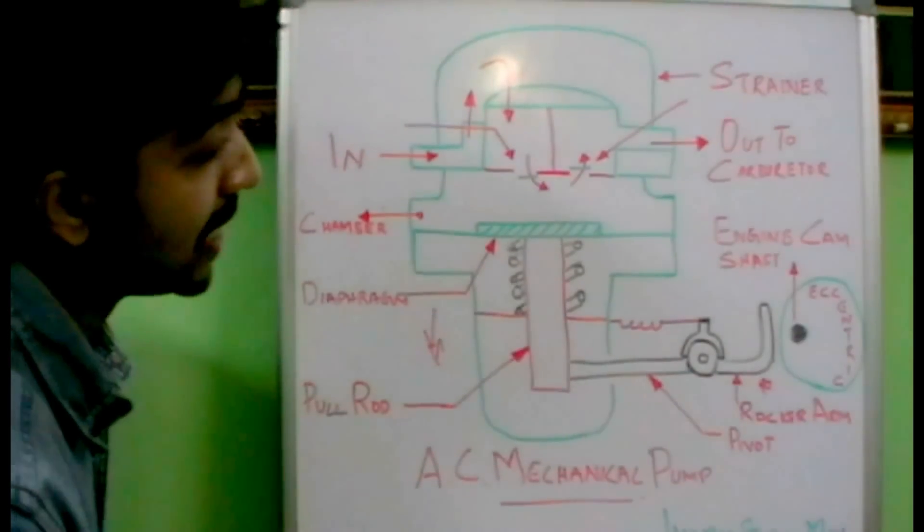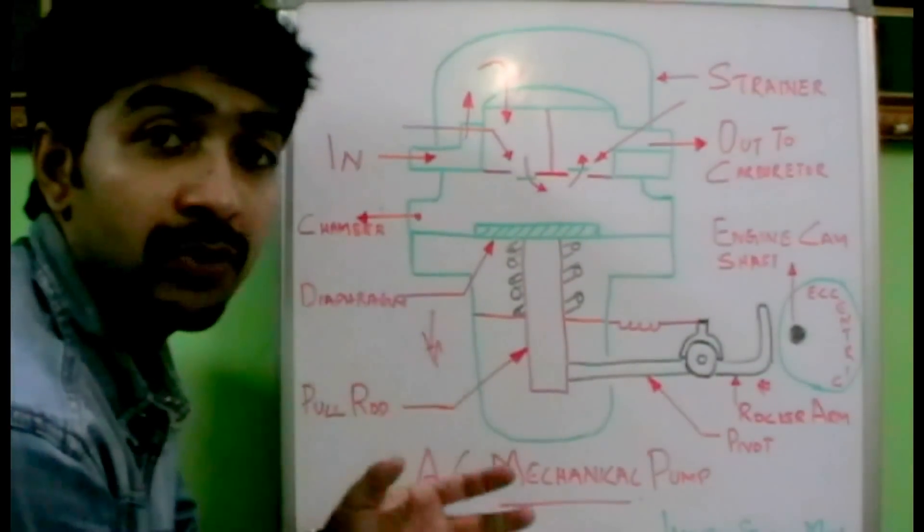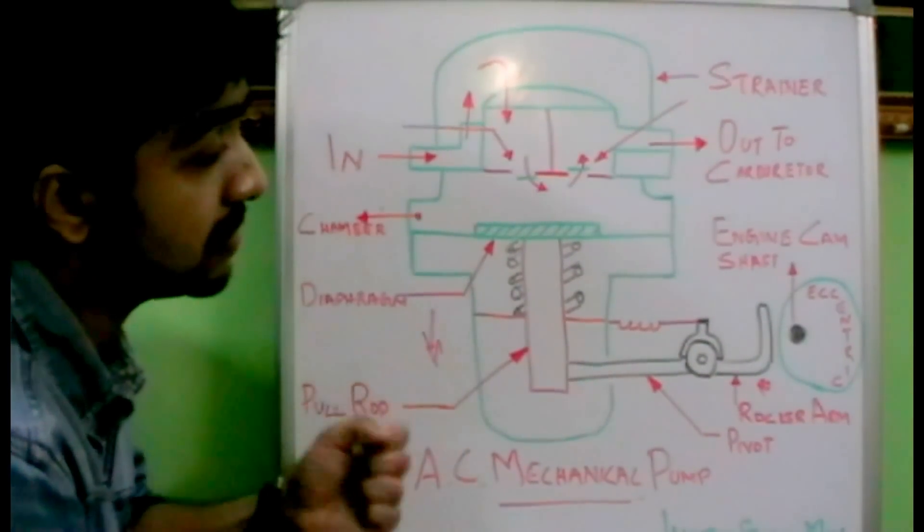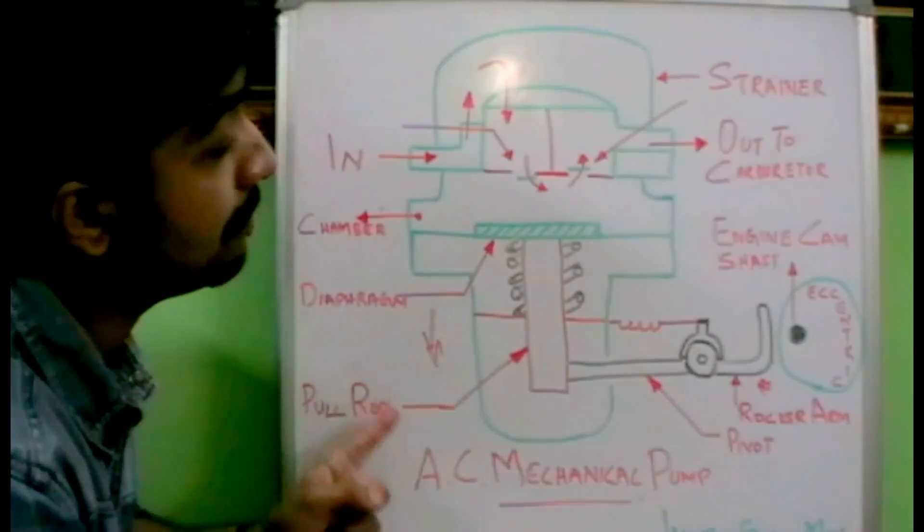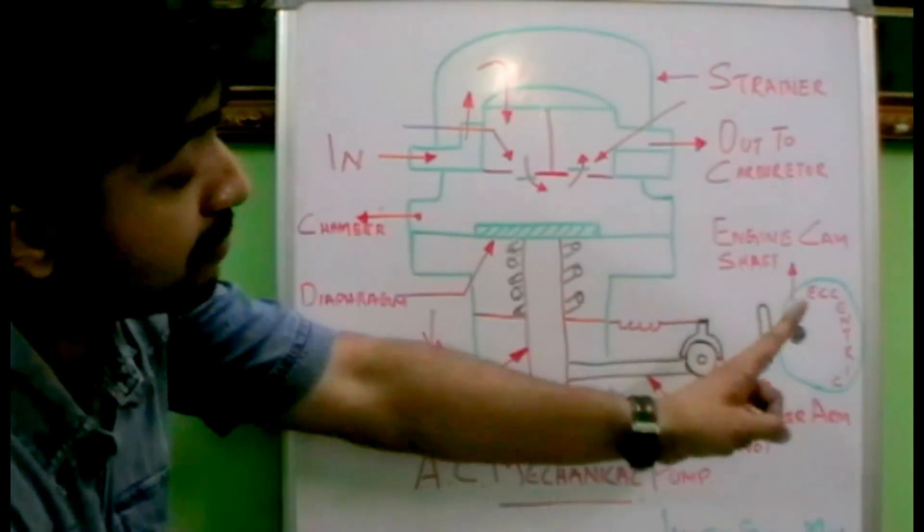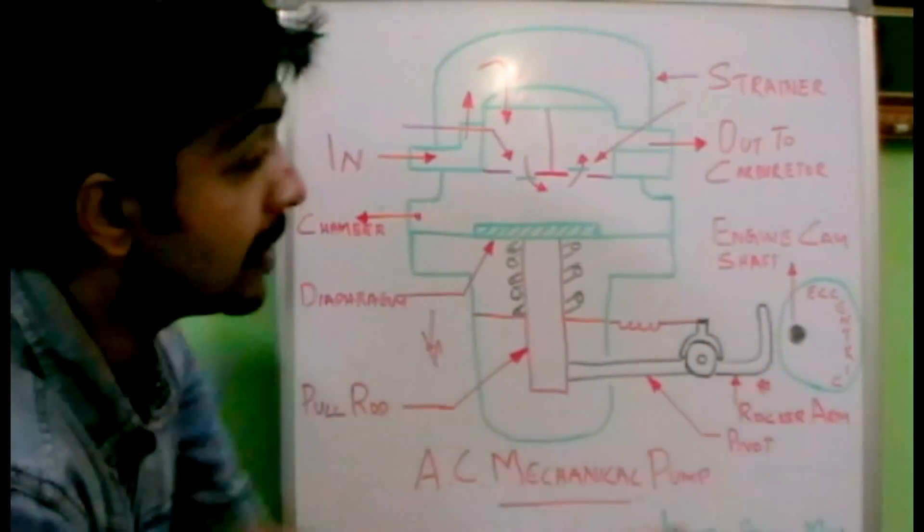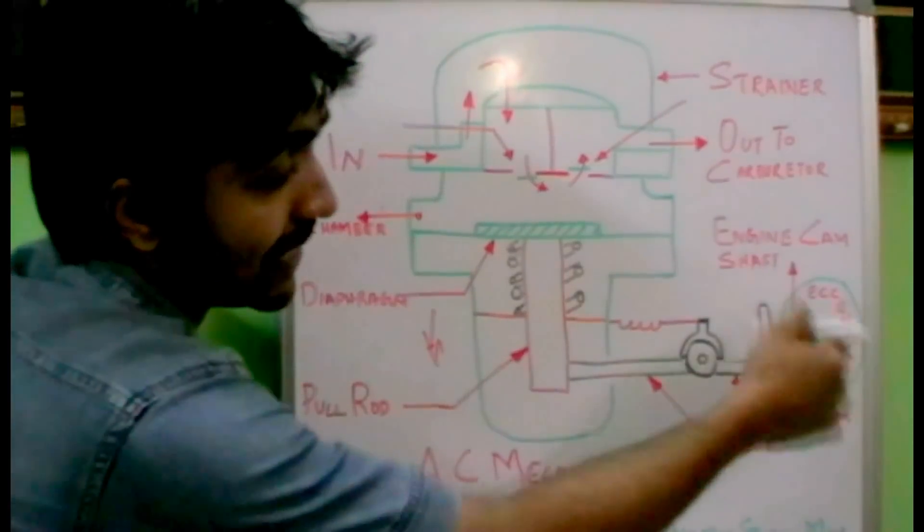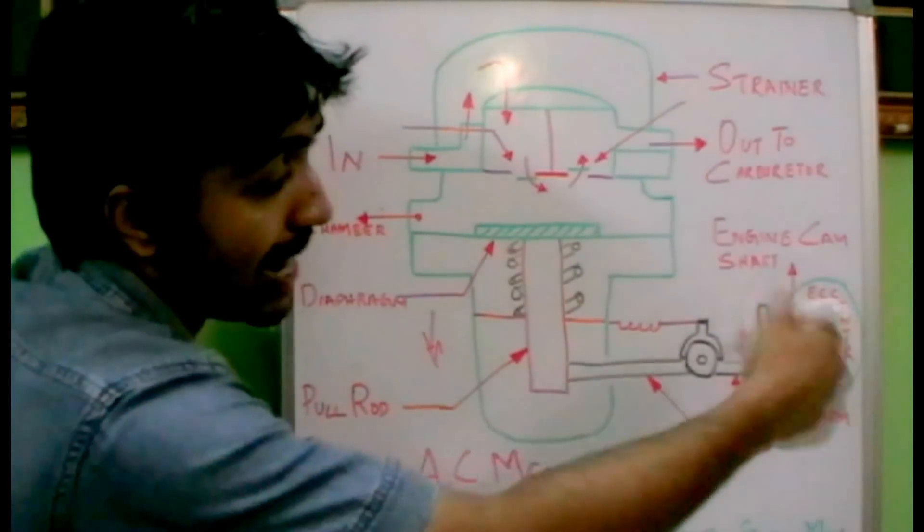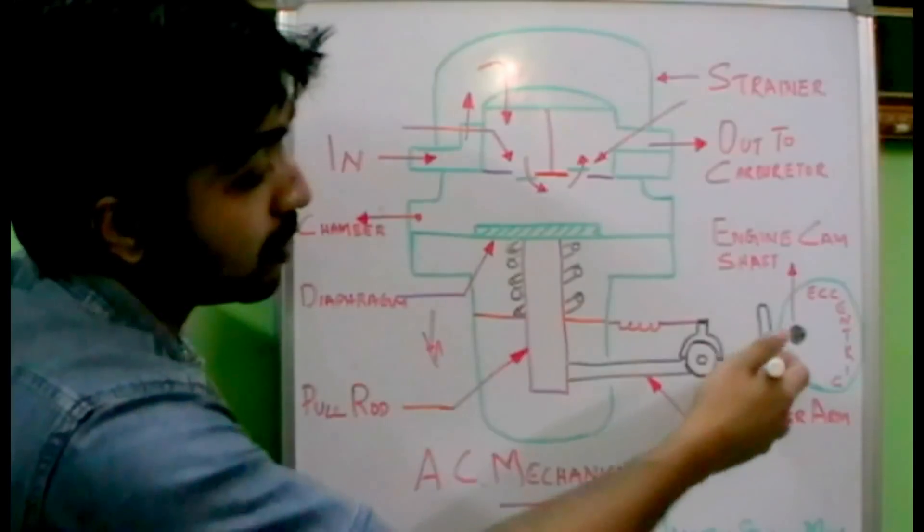So the drive for this mechanical pump, of course it is coming from the engine itself. The engine is giving the drive for this mechanical pump. The engine camshaft is providing the drive through an eccentric cam. So the engine camshaft is connected towards the eccentric cam, and as it rotates, the drive raises the rocker arm.